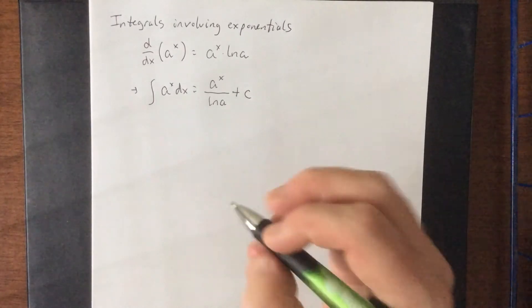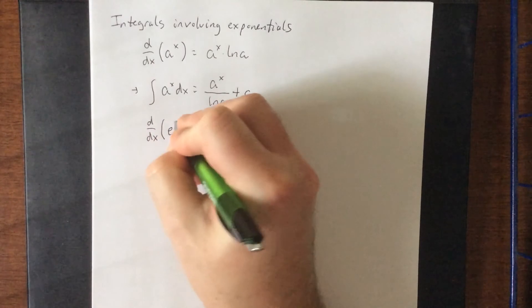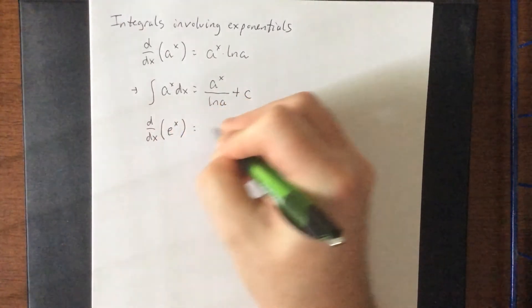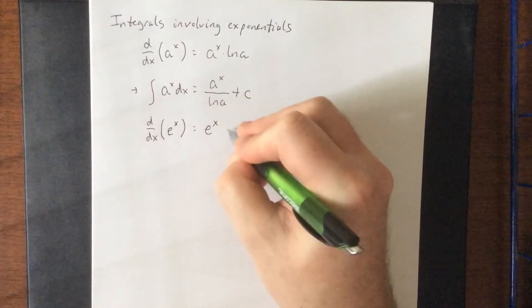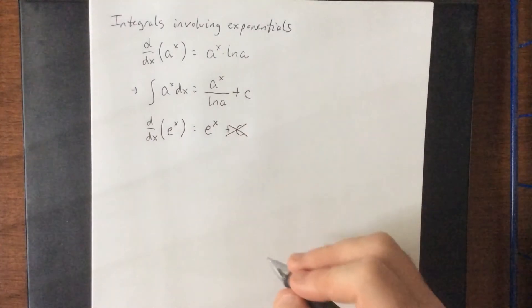Now this also means that there will be a favorite exponential for us to both differentiate and integrate. If I were to differentiate e to the x, I would get e to the x, not plus c. That's for the integral.